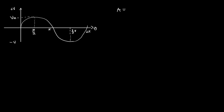The expression of the area for the sine wave is given as Vm·sin(ωt), where ω is the angular frequency and T is the time.